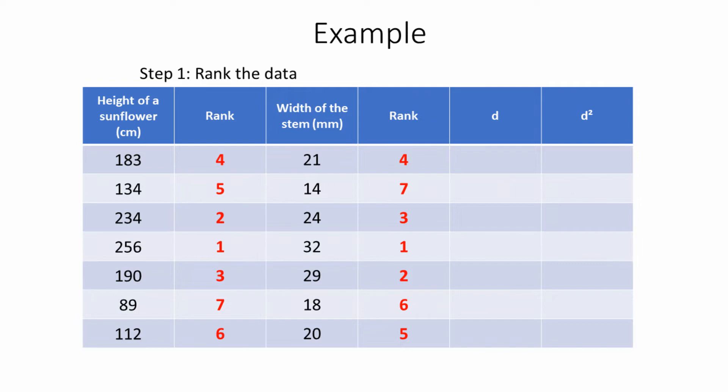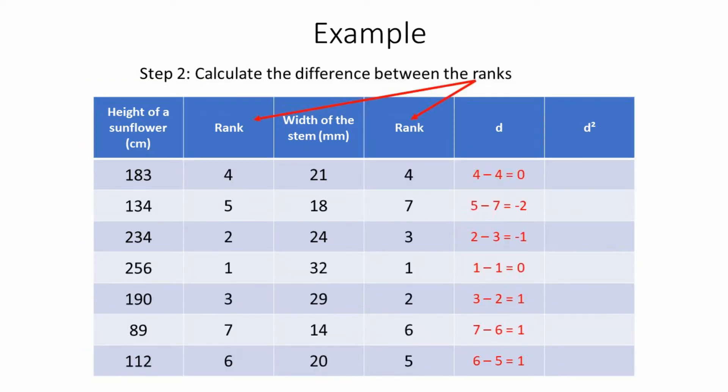Then we do the same for the width of the stems — we put all these in rank order as well, with the highest being rank number one and the lowest being rank number seven, or however many different variables you have. It doesn't have to be seven ranks. Then, in the second stage, we take away one rank from the other rank, and we're left with d — this is the difference between the two ranks. In the first line, both are ranked at four, so four minus four equals zero, and so forth going all the way down.